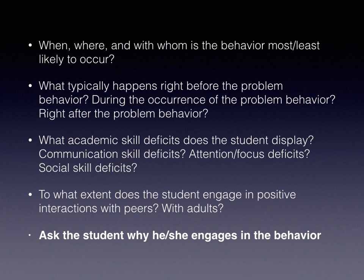Ask what academic skill deficits, communication skill deficits, attention and focus deficits, or social skill deficits the student may have — thinking back to those characteristics of students with disabilities, because many times problem behaviors occur because something related to the student's unique characteristics is not being supported or addressed. Also ask to what extent the student engages in positive interactions with peers and adults. If a student doesn't have many opportunities for positive interactions, they may engage in problem behavior to get any interaction — which is often negative attention at that point.